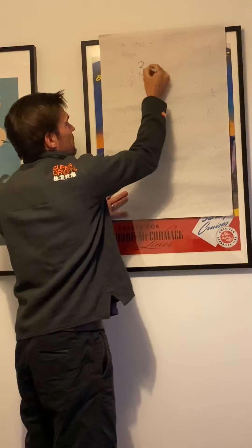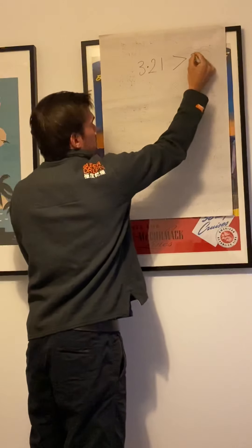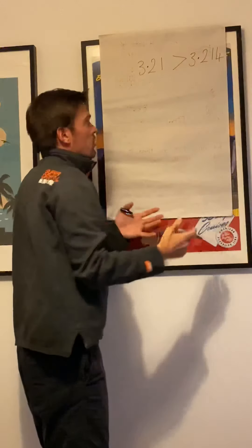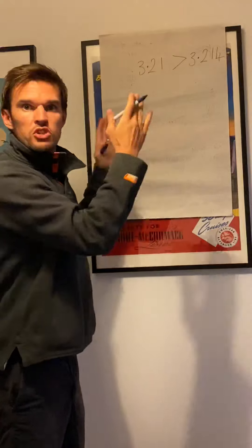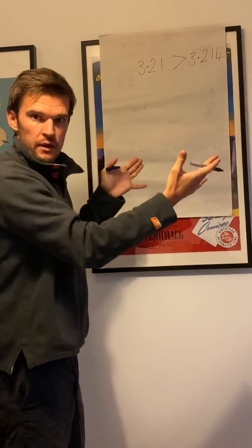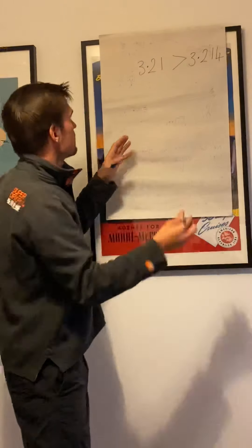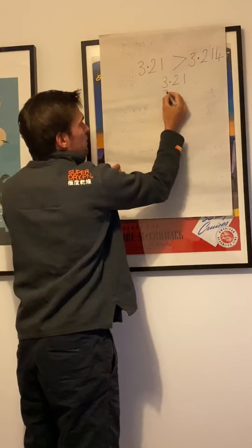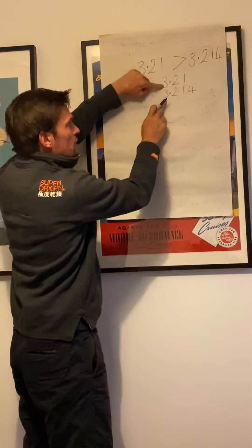3.21 is greater than 3.214. True or false? Simply start from the left and compare. You may want to write them under each other so you can compare easier. So I might go 3.21, 3.214.